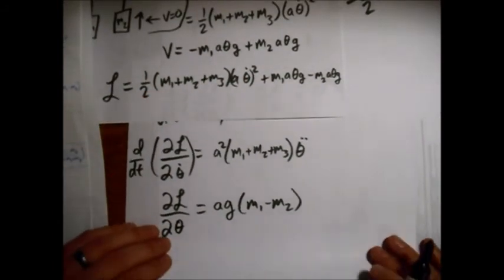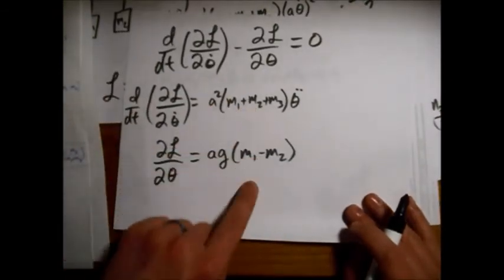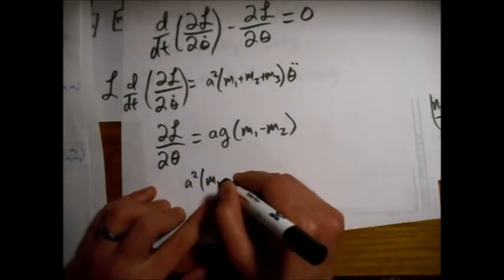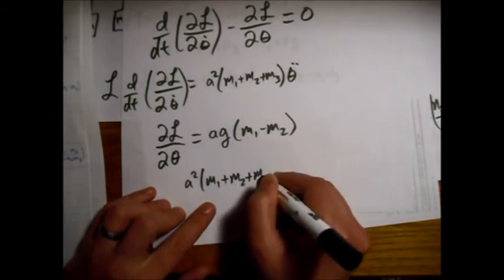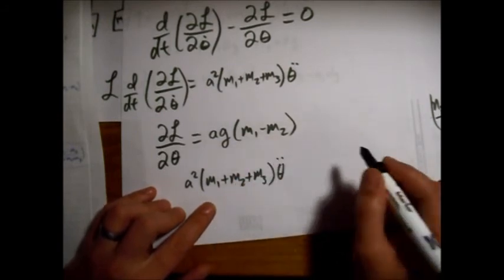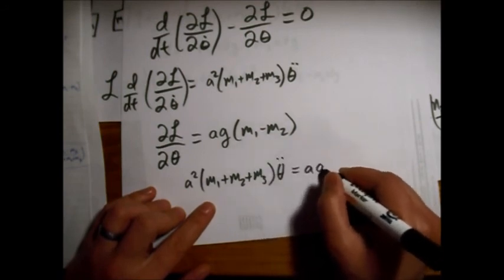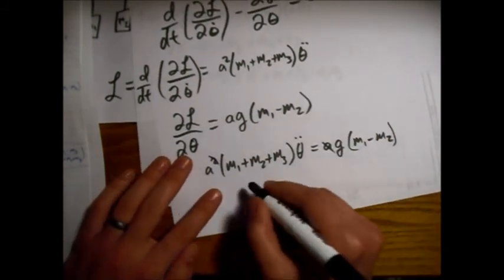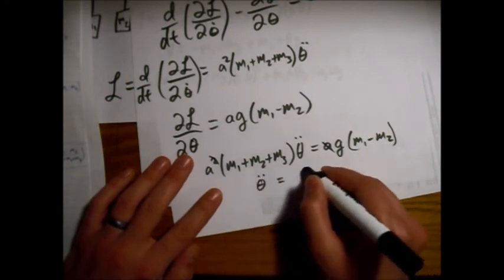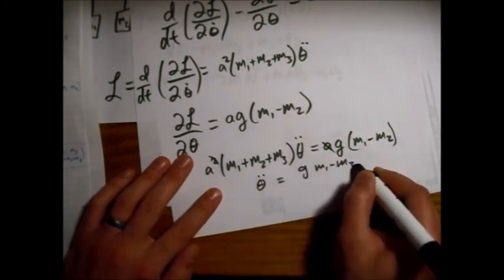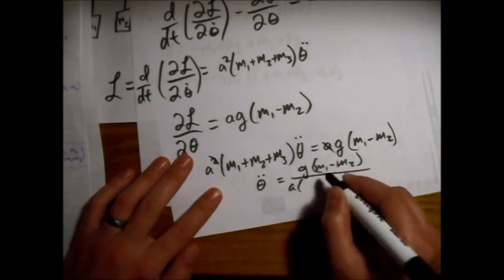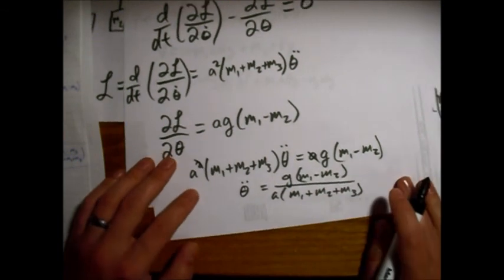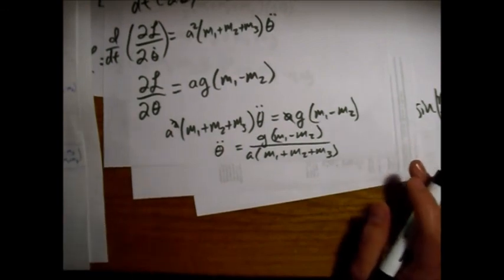So now we can find our equation of motion just by setting this equal to this. So A squared, the sum of masses, M1 plus M2 plus M3, theta double dot, not theta dot actually, equals A G M1 minus M2. Okay, so one of these A's we'll divide out and we have theta double dot equals G M1 minus M2 over A times the sum of the masses. Just like that. And our equation of motion.